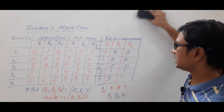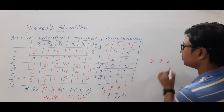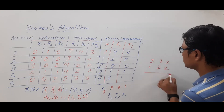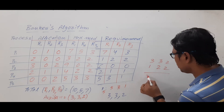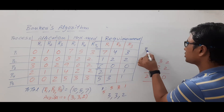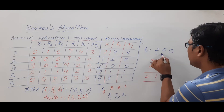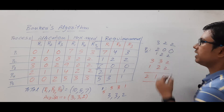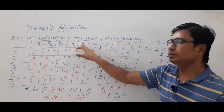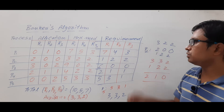Let's start with process P2. Current availability is 3, 3, 2 and P2's requirement is 1, 2, 2. After allocating to P2, the current availability becomes 2, 1, 0. P2's previous allocation was 2, 0, 0, and we add 1, 2, 2 to get a new total allocation of 3, 2, 2. This matches P2's max need of 3, 2, 2, so P2 will complete its task.